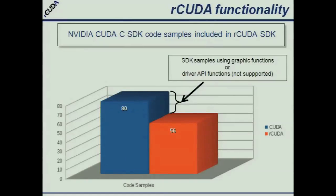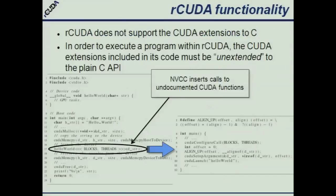For the CUDA SDK samples — 80 in total — we have successfully implemented 56. The 24 remaining ones either used functions from the driver API, which we are not supporting (we only support the higher-level API), or they deal with graphic functions that we are not supporting. Basically, what we are concerned about is GPU computing, not graphical solutions.